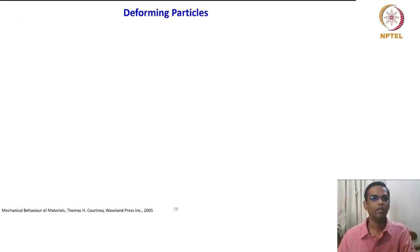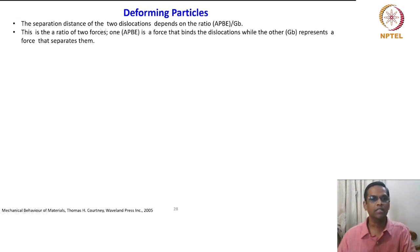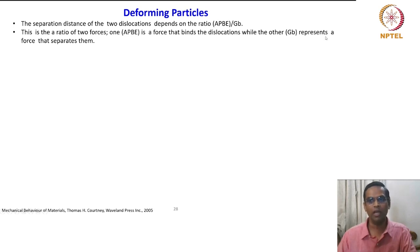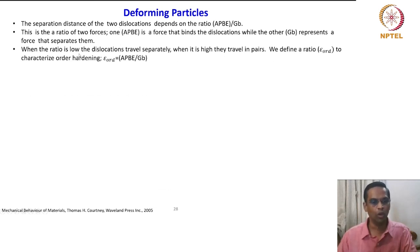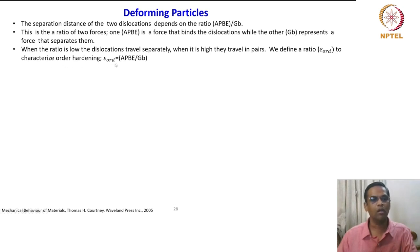The separation distance of the two dislocations depends upon the ratio of antiphase boundary energy to Gb. This is the ratio of two forces: antiphase boundary energy is a force that binds the dislocations, while Gb represents the force that separates them. Depending upon the ratio, the separation of these two dislocations will be decided. We define a ratio epsilon ordering to characterize order hardening: ε_ordering = APBE / Gb.